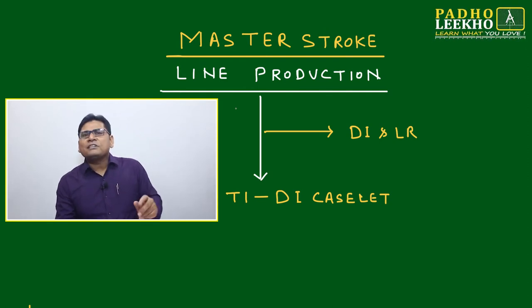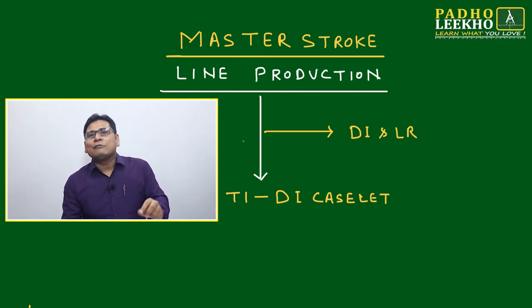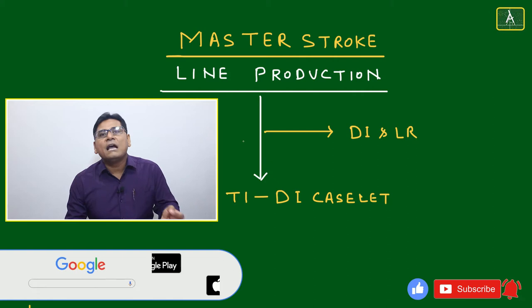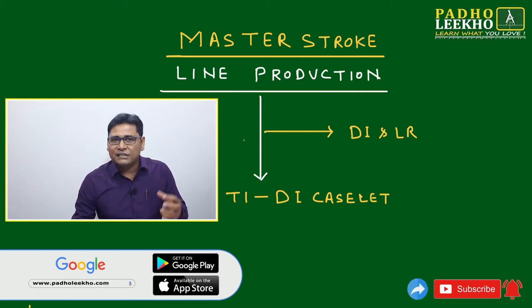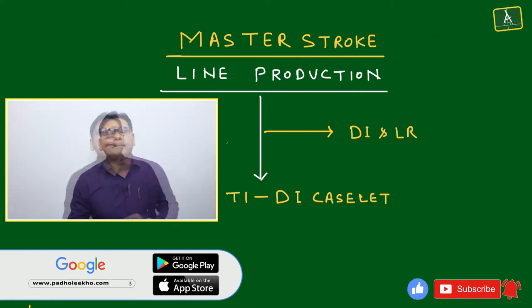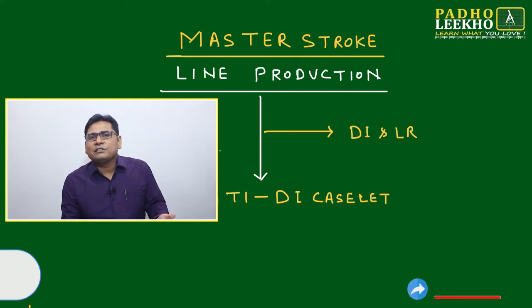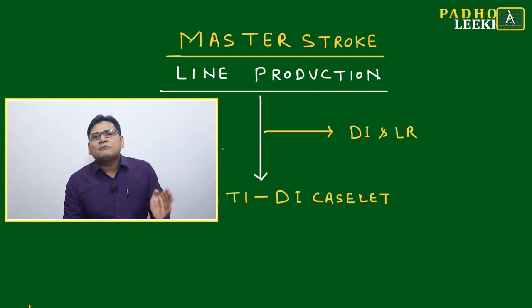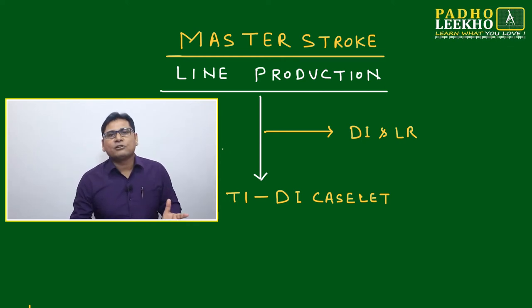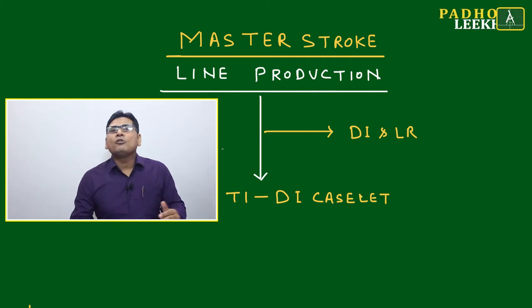We'll understand what is manufacturing process and line production, because without understanding this we will not be able to understand this type of caselet in full detail. We'll look at how many manufacturing steps are done under a factory setup, and understand what line production is, along with different types of line production setups for different products.